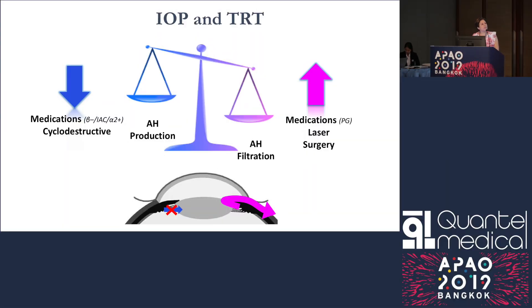As you know, glaucoma is a chronic disease and IOP reduction is the only way to delay progression of glaucoma. The treatment has two mechanisms: reducing the production of aqueous humor or increasing the aqueous outflow.